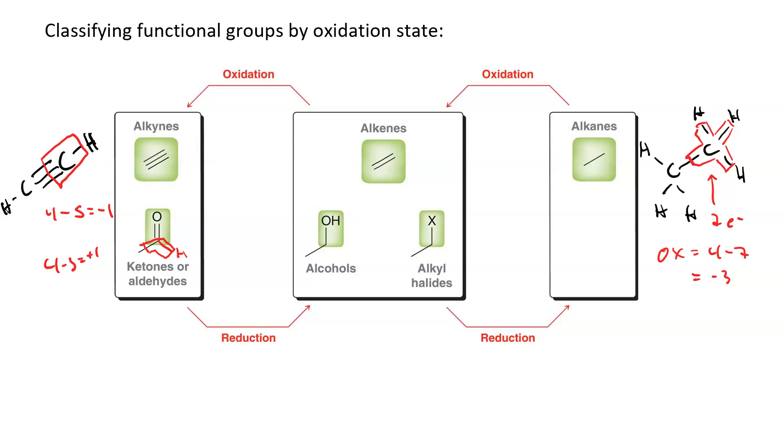And then in acetic acid, well this carbon only has one electron inside its box, and so we have 4 minus 1 equals plus 3. So carboxylic acid is even further to the left, being the most oxidized. Methane is the most reduced.